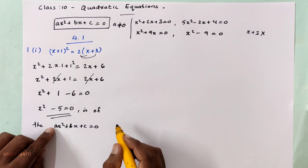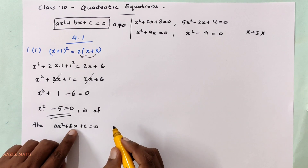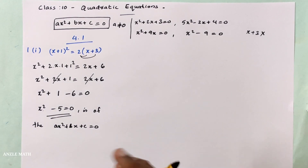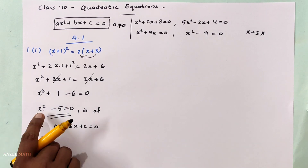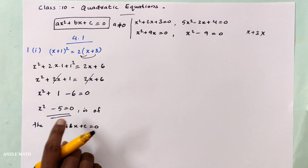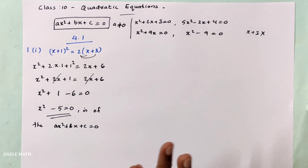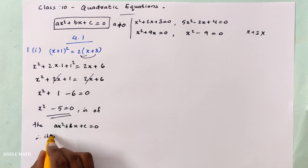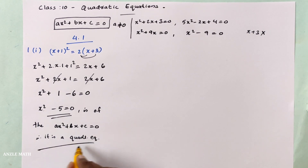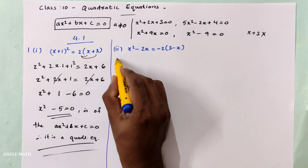This is of the form x² plus bx plus c equals 0. The highest power is x squared, which is 2; a equals 1, constant c equals minus 5, and the middle term b is 0. Therefore, this is a quadratic equation.